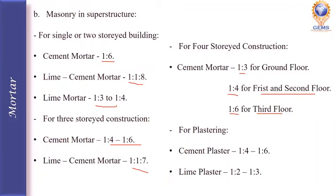For plastering work, cement plaster is 1:4 to 1:6, and lime plaster is 1:2 to 1:3. The first number in the ratio represents the binding material, and the last number represents the aggregate. These are the various common proportions of mortar used in civil engineering works.